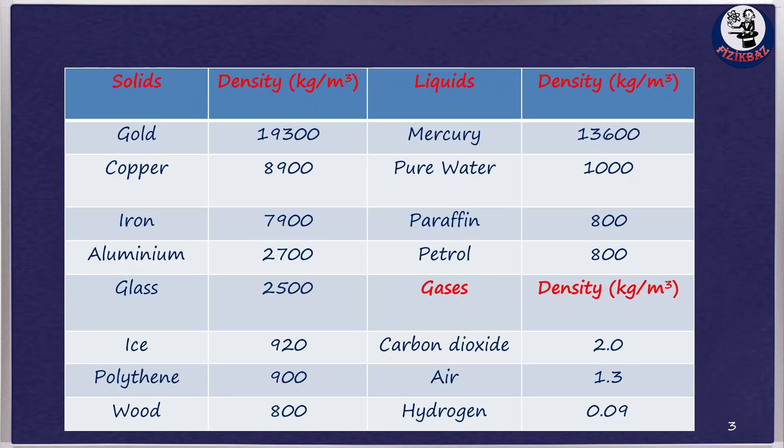The approximate densities of some common substances are given in this table. As you can see from the table, solids have much greater densities than liquids and gases.